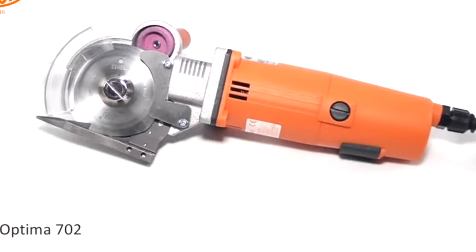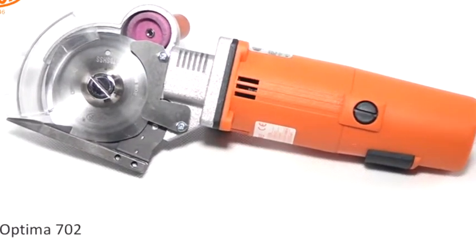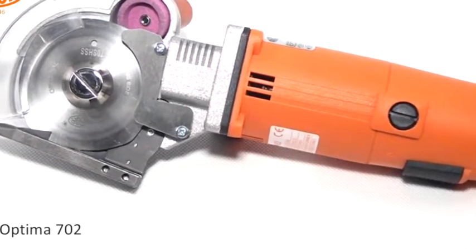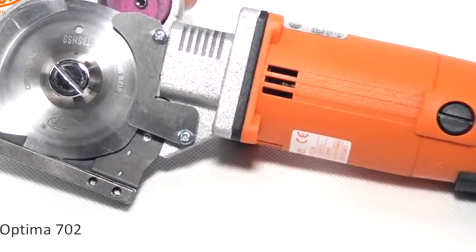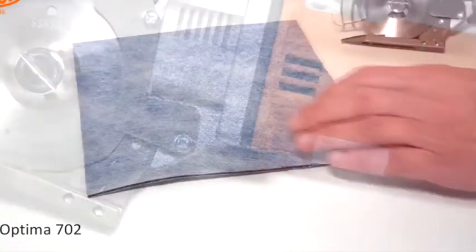Razor Electro Powered Shears Optima 702 is designed to cut any kind of industrial textiles and elastomers up to 15 mm thickness.